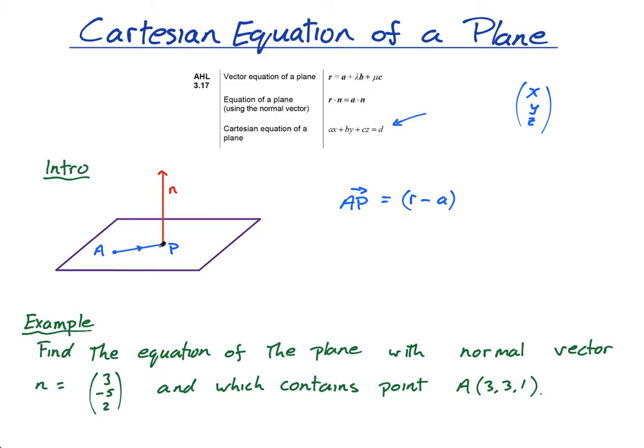So, we have AP is R minus A. Fine, now, by definition, what the normal is, the normal and this vector, i.e. any vector that's on the plane, are perpendicular. So I can say AP dot N, so N is our normal vector. This has to equal zero, because perpendicular vectors, the dot product equals zero. But this is R minus A, R minus A dot N equals zero. And then multiply this out, R dot N minus A dot N equals zero. And then I have R dot N equals A dot N.